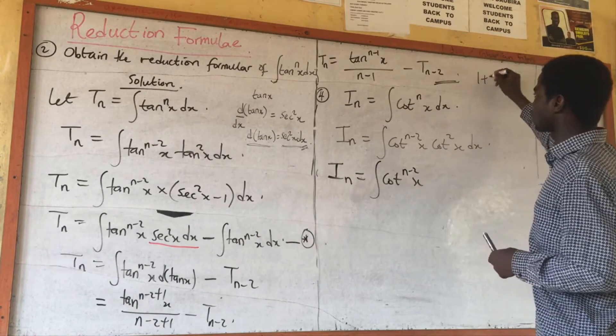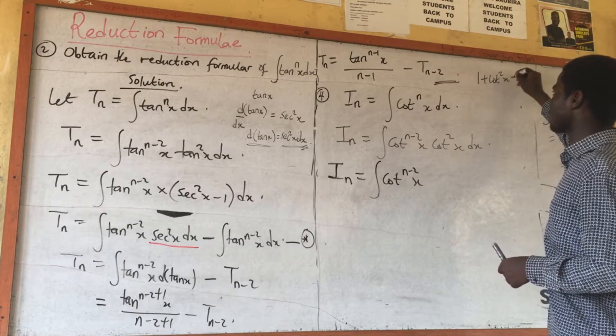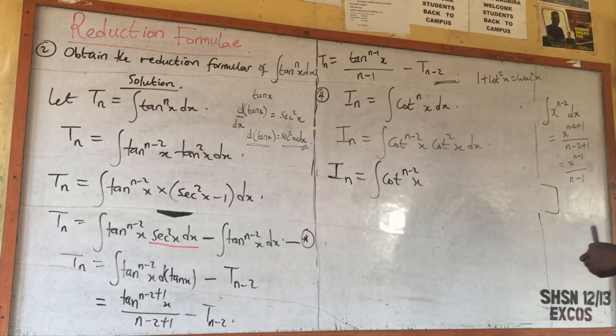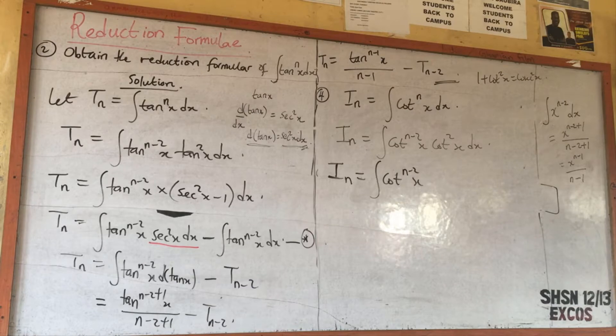We have that 1 plus cot²s equals csc²s, that is from trigonometric identity. That means cot²s is equal to csc²s minus 1.